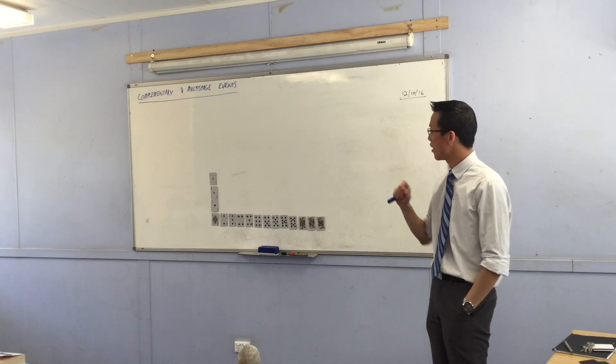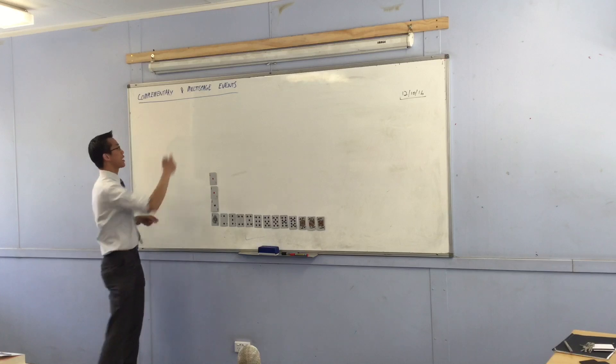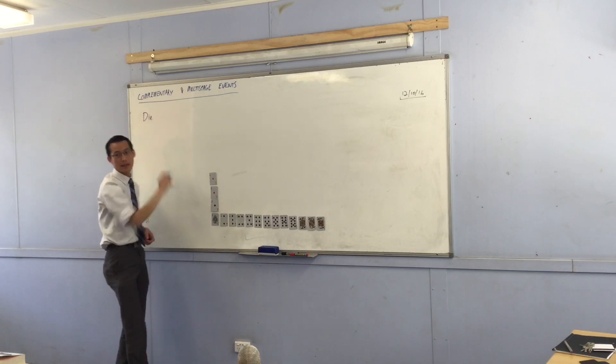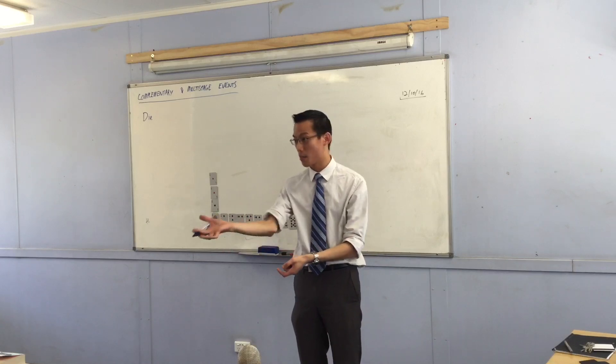Rewind just a little bit. When you think about events in isolation, just think of the simplest example you can. Let's go back to thinking about a die. Now, the example I always go back to is, just pick a number, any number? Pick a number and a die for me.